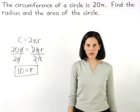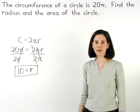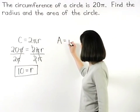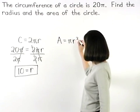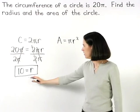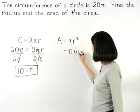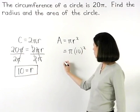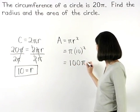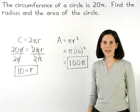Now to find the area of the circle, remember that the formula for the area of a circle is pi r squared. Since the radius of our circle is 10, we have pi times 10 squared, or 100 pi. So the area of the circle is 100 pi.